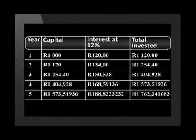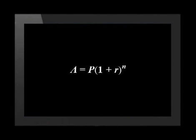Are you telling me that in five years we'll have R1,762.34? This is so cool — that's compound interest. I told you it was clever. But there's a much faster way to calculate compound interest using a smart little formula. It goes like this: A equals P multiplied by one plus r to the power of n.